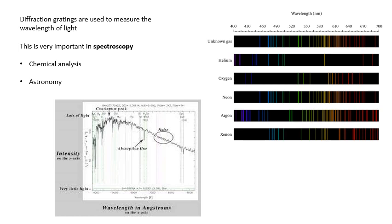It's very, very important in astronomy. In astronomy, we look at the spectra of stars and from the spectrum of the light, we can figure out what the stars are made of.